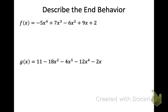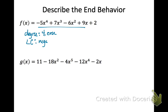Let's describe the end behavior of the F function. The degree is 4, which is even, and the leading coefficient is negative 5. Since it is even, the end behavior will be the same. And since it is negative, the end behavior will be down and down. You can describe it with words and with arrows.